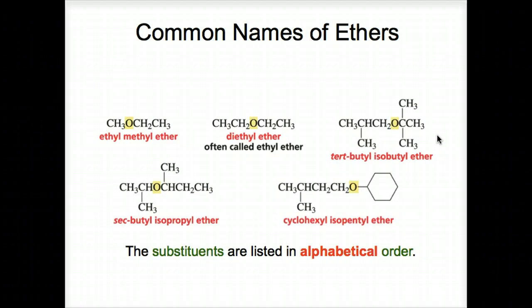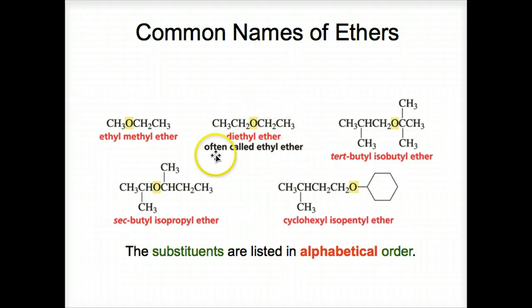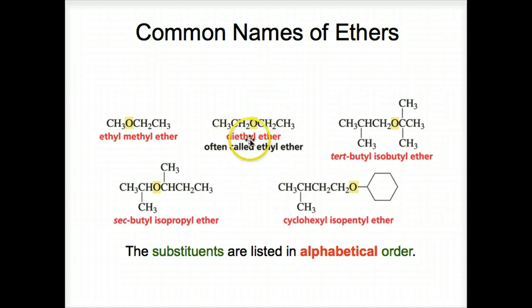Common names of ethers. Ethyl methyl ether — notice this is ethyl, this is methyl, alphabetized. This is a common name but it also fits systematically. Here's diethyl ether, often called ethyl ether. Strictly speaking, diethyl ether is a better name than ethyl ether, although ethyl ether is commonly used.